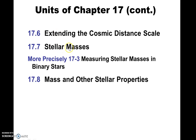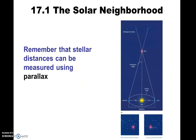We'll talk about stellar masses — how do you measure the mass. There are ways of measuring it directly, especially if you have binary stars. If one or more stars are orbiting each other, then calculating the mass is done with Kepler's third law. And then we'll close out with mass and other stellar properties.